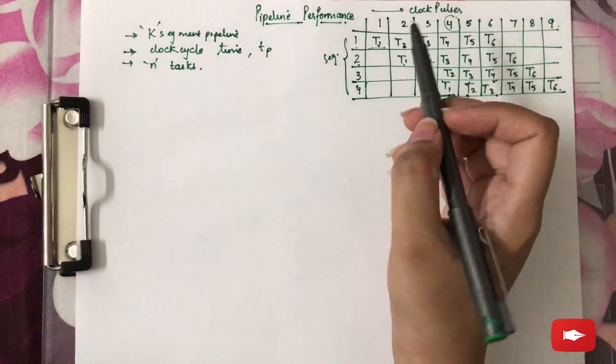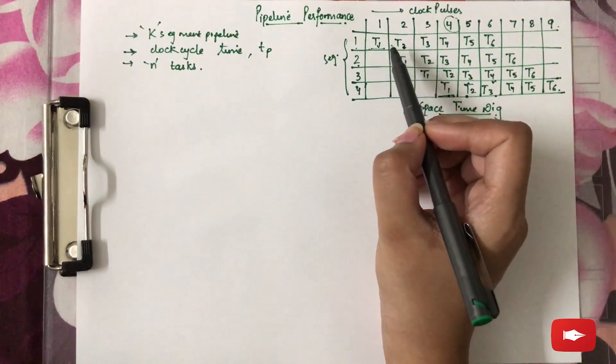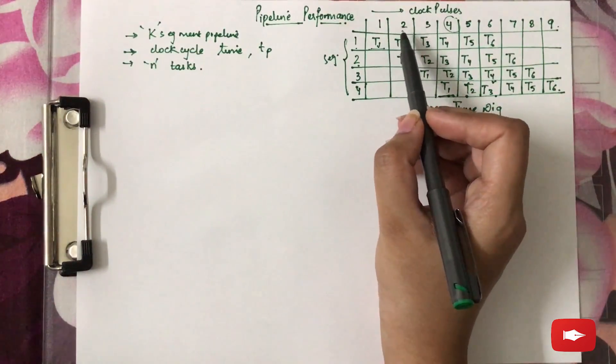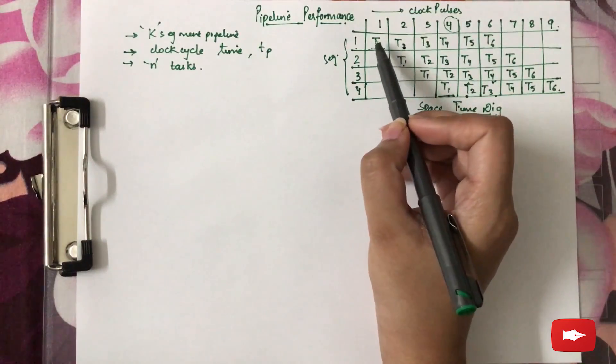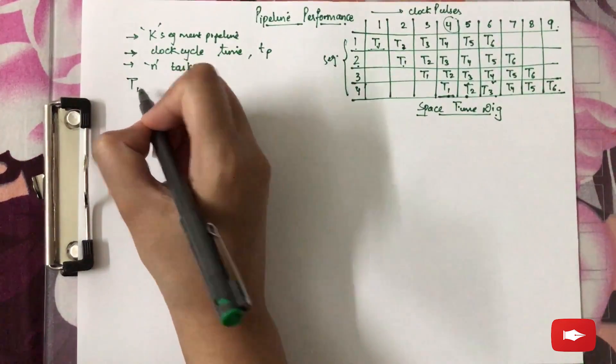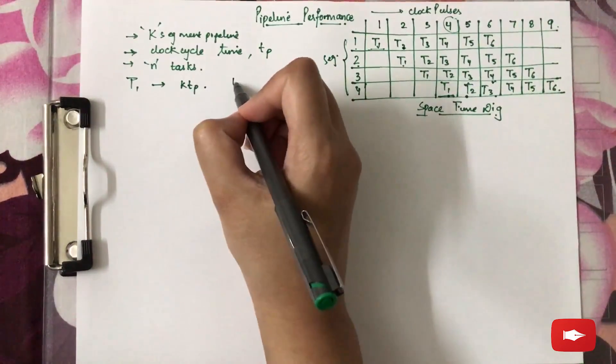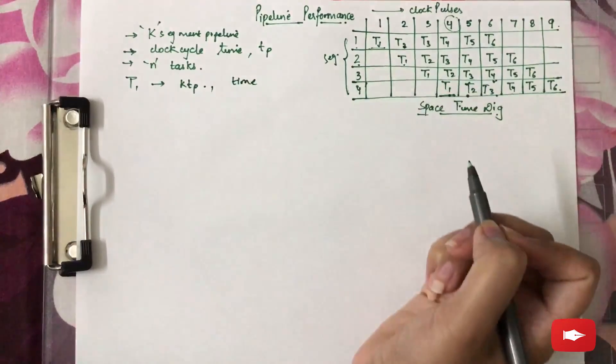If you are talking about the first task, it will take as many clock pulses as the number of segments. Therefore, for the first task T1, KTP time is required to be completed.